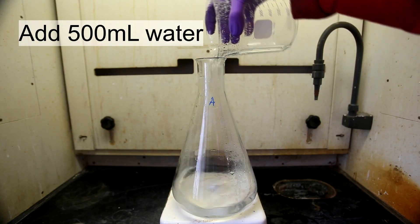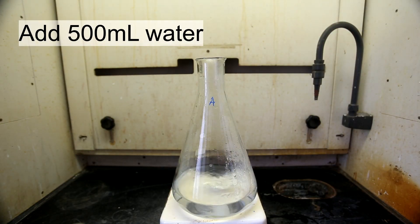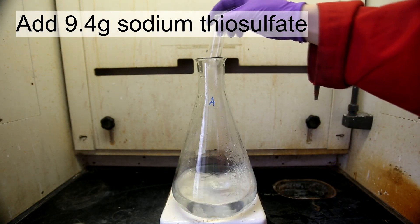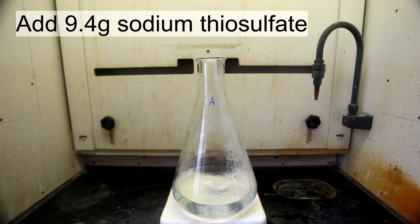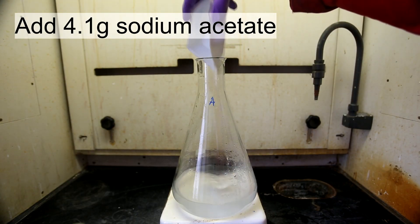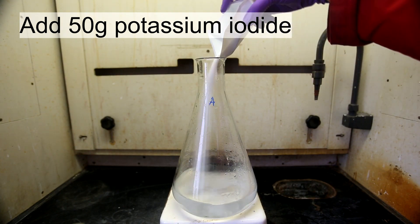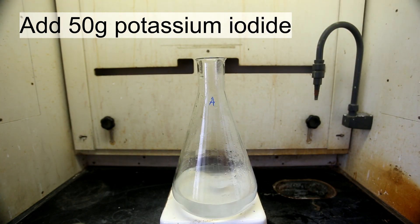To the starch solution, add 500 milliliters of water. Next, add 9.4 grams of sodium thiosulfate, followed by 4.1 grams of sodium acetate, and then 50 grams of potassium iodide as the last ingredient.